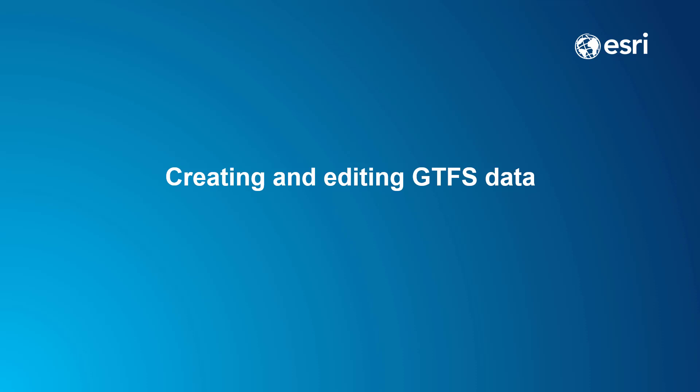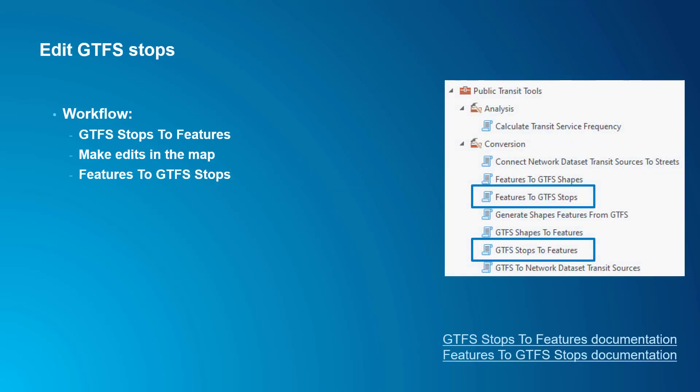Then I'll show you how you can create a shapes.txt file for your GTFS dataset, if you don't have one. If you want to make some edits in your GTFS stops.txt file, you can use the following workflow. First, run the GTFS Stops to Features tool and create a feature class from your GTFS stops. Then, make any edits you need to in the map and using the attribute table. And then finally, run the Features to GTFS Stops tool to create a new version of your stops.txt file that includes the updates.